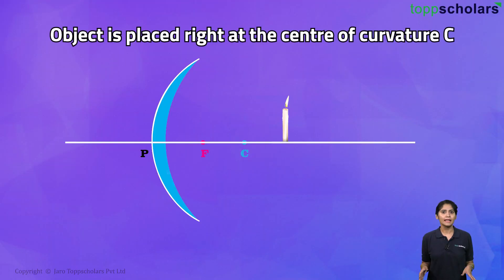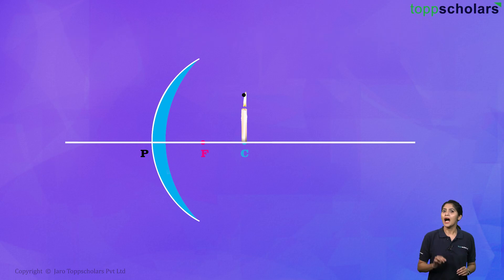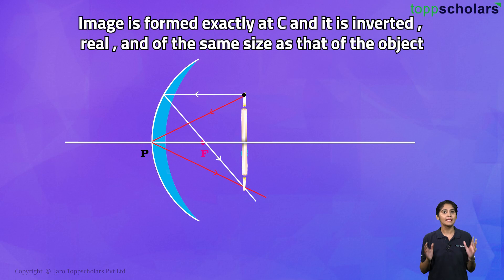Now, let's say we bring the object right at the center of curvature. Now, the image will be formed right at C. The image height will be exactly the same as the object's height.